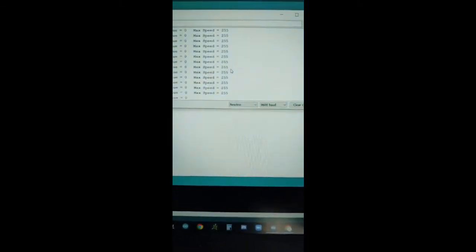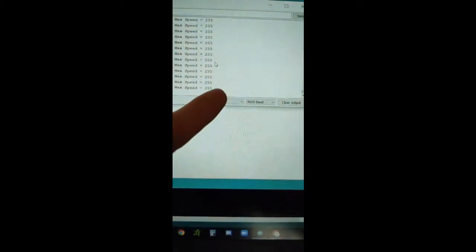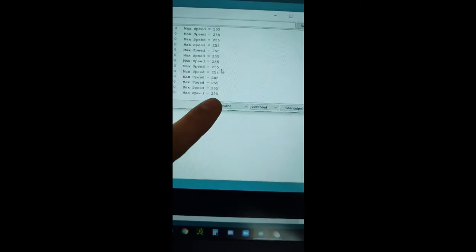The coding behind this, remember how I said we wanted to go 0 to 255? Your max speed here is 255, that means you're going to output a full 5 volts when you ramp up all the way.